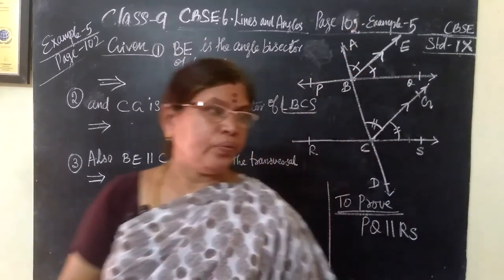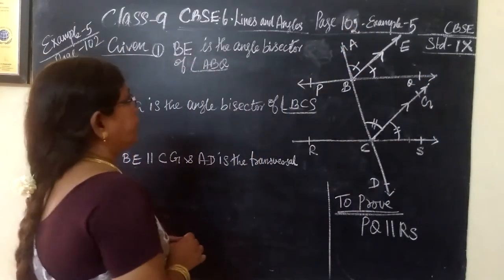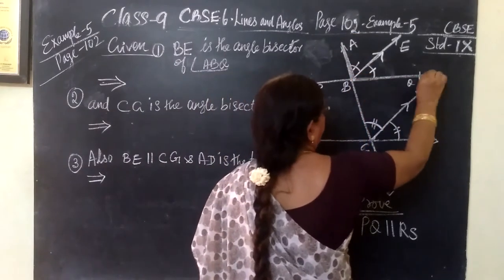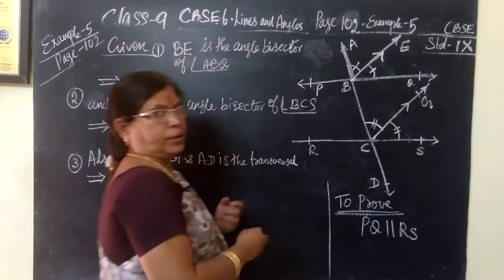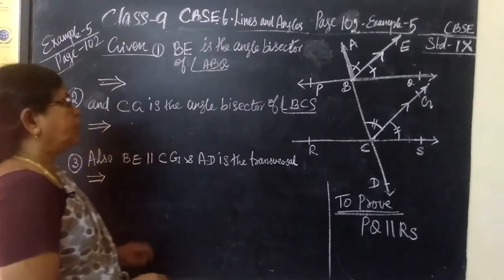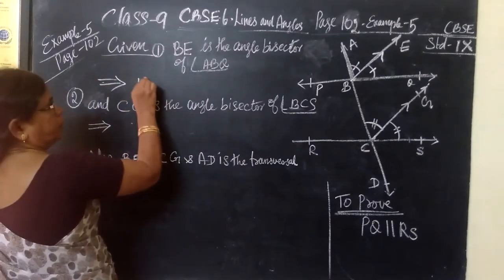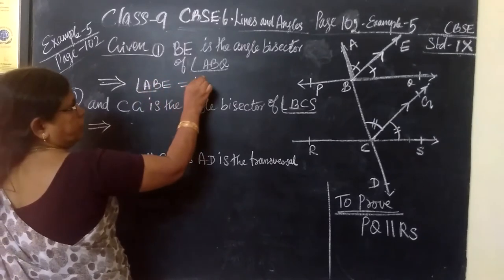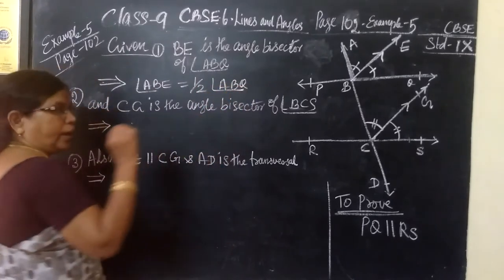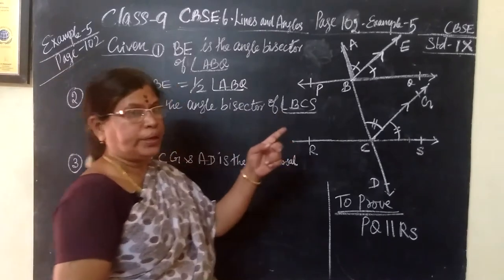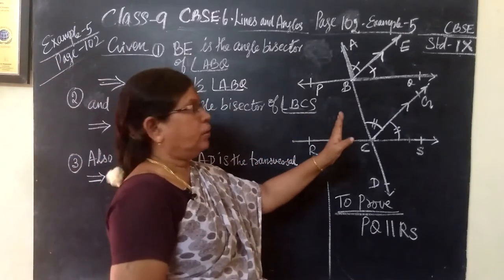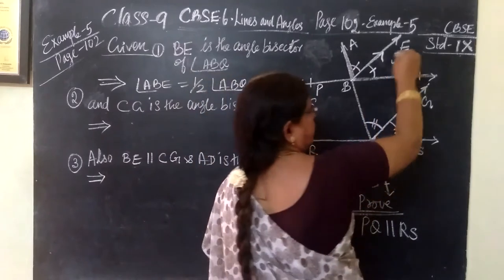You are given the adjoining figure in which BE is the angle bisector of angle ABQ. The angle bisector divides the whole angle into two equal parts, so therefore angle ABE equals half of angle ABQ.